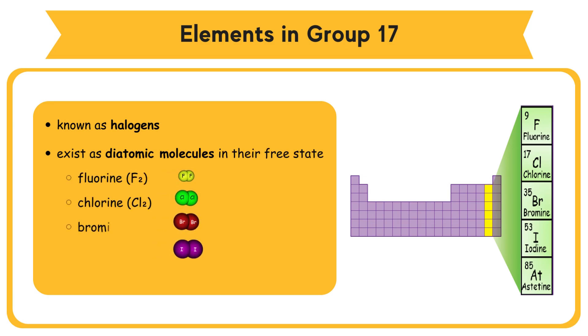Halogens exist as diatomic molecules in their free state: Fluorine (F₂), Chlorine (Cl₂), Bromine (Br₂), Iodine (I₂), and Astatine (At₂).